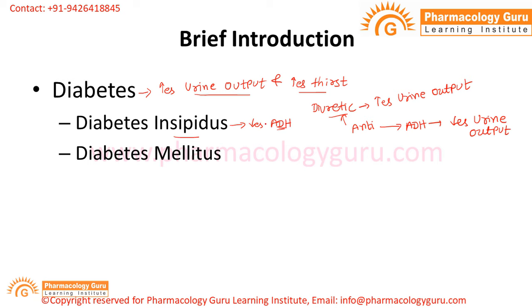If the deficiency of ADH occurs, it means there will be an increase in urine output. So diabetes insipidus is a hormonal disorder characterized by the deficiency of ADH hormone. ADH is a posterior pituitary hormone, also known as vasopressin, and it causes increased urine output and increased thirst.